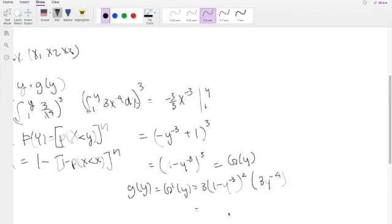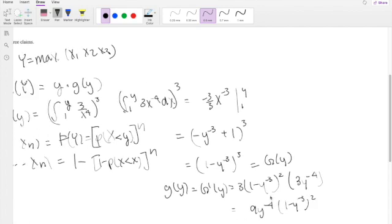So simplifying this a little bit further, you get 9y^(-4) times (1 - y^(-3))^2.